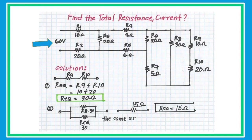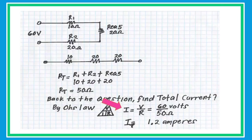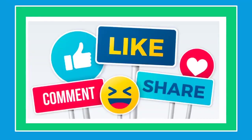Given voltage is 60 volts, using Ohm's Law: I equals V over R equals 60 over 50 — total current is 1.2 amperes. Thank you for watching and see you on the next video. If you liked this video, please like, share, and subscribe. Have a good one!